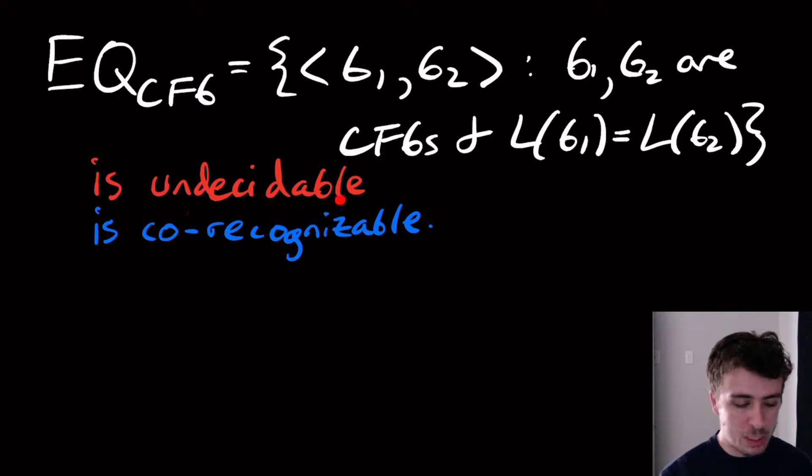What we'll show is that this is undecidable and that's pretty easy to do. We'll also show that it's co-recognizable. This co means that its complement is recognizable. What these both imply, because we've shown that a language is decidable if and only if it is recognizable and its complement is recognizable,